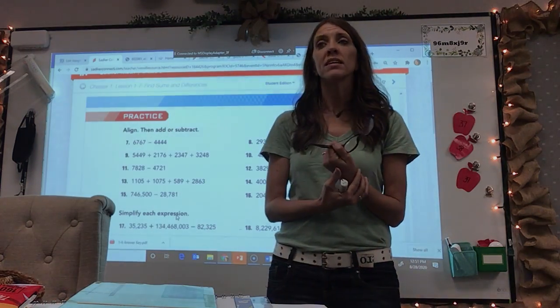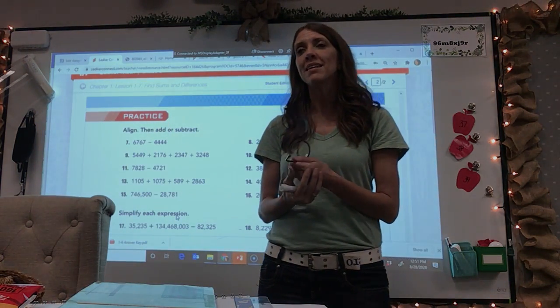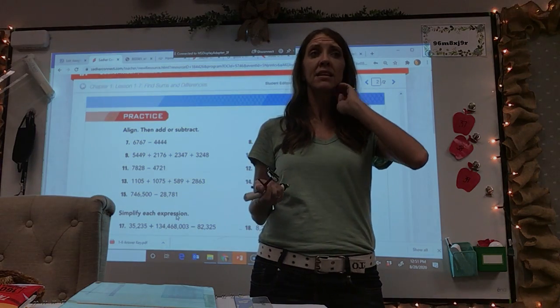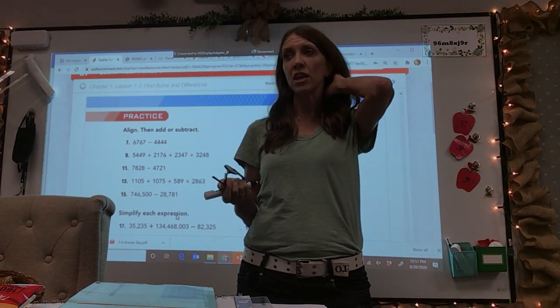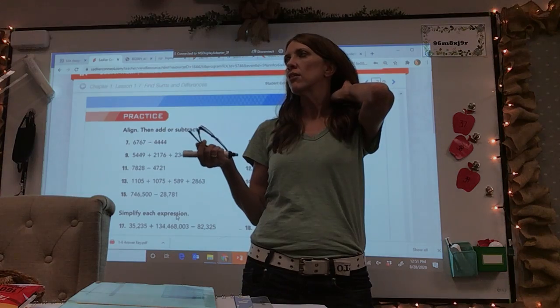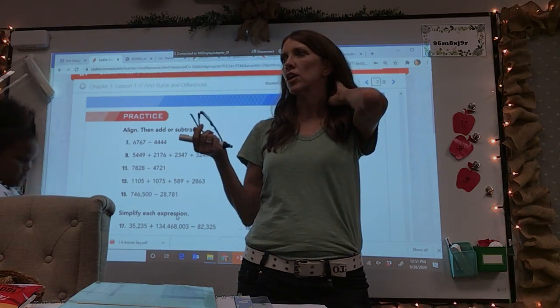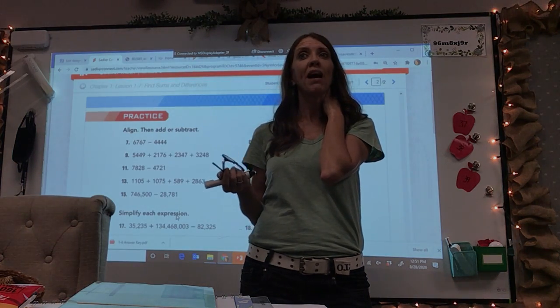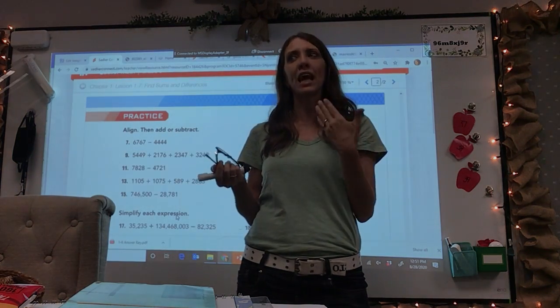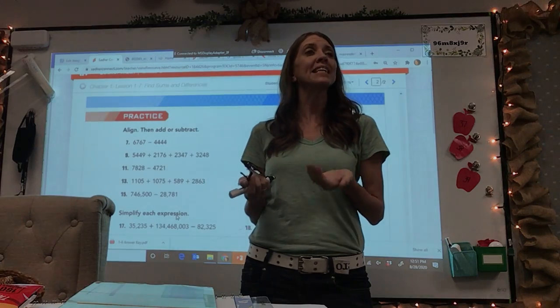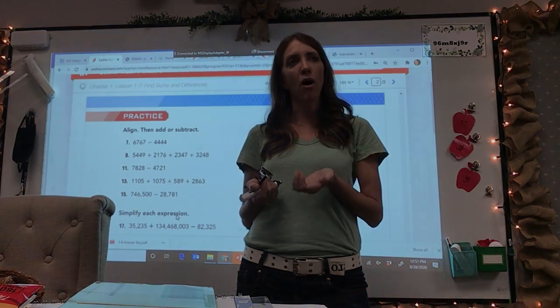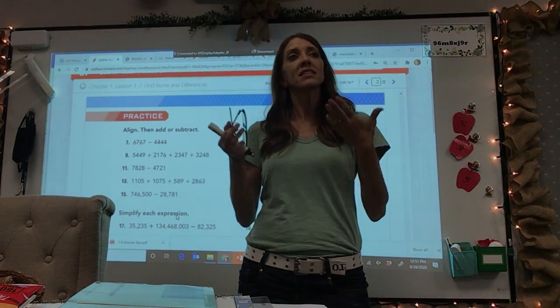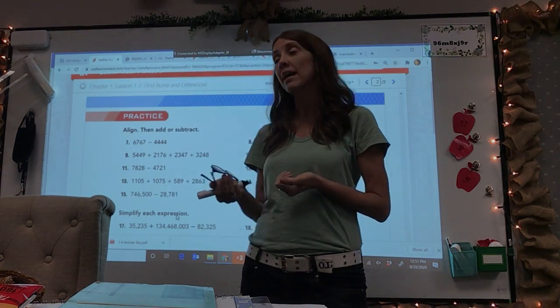Okay, so 1-7 is a pretty easy lesson. It's kind of review from stuff that you've built on from second, third, and fourth grade. Really, it's just finding sums when you have to carry. You guys know how to carry over to the next place and finding differences when you have to borrow. So this is a pretty easy one, 1-7. This is the last one, and then next week will be our test.